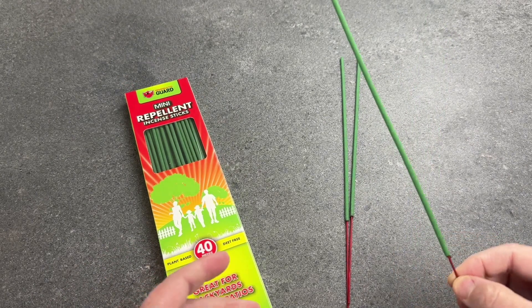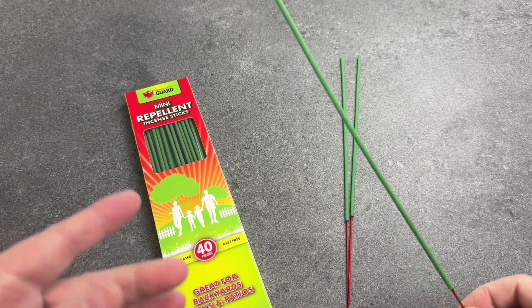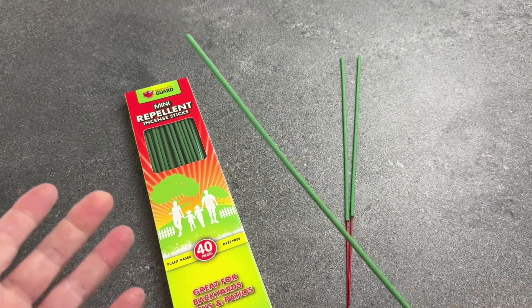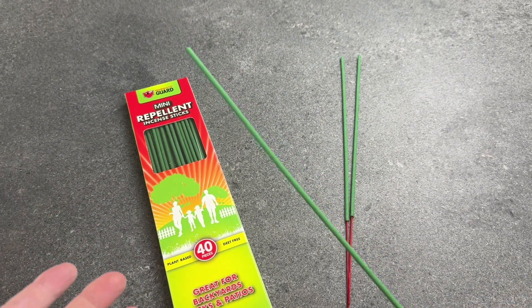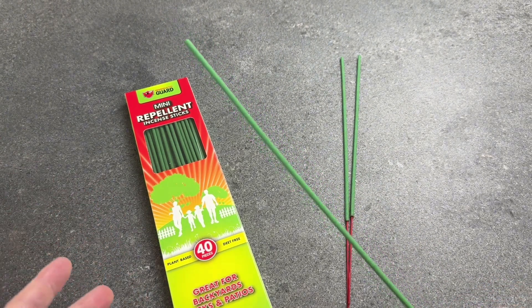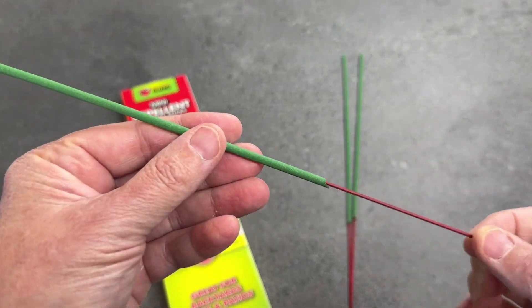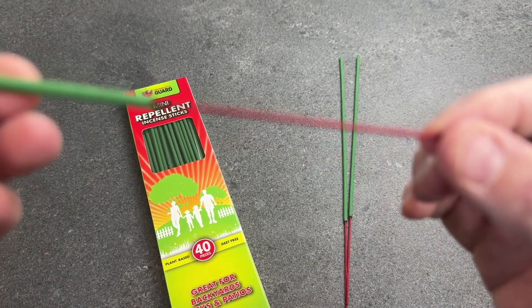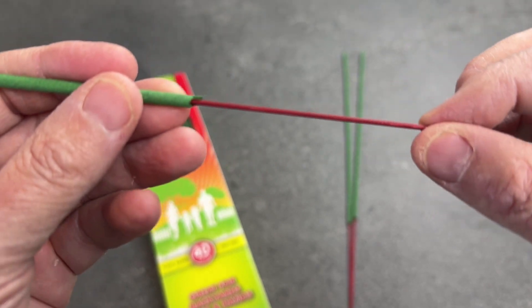Now what I like about these is that they're made with essential oils like citronella, lemongrass, and rosemary. And the only other ingredient is sawdust, and that's what the stick is made of.